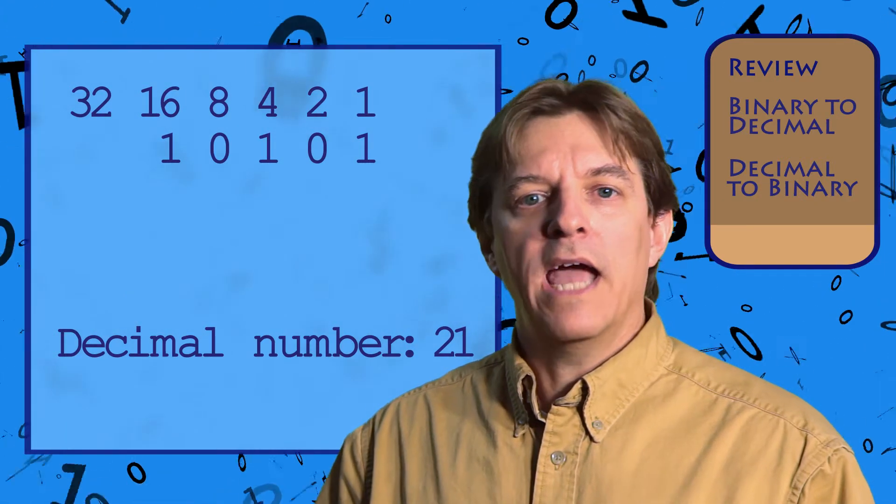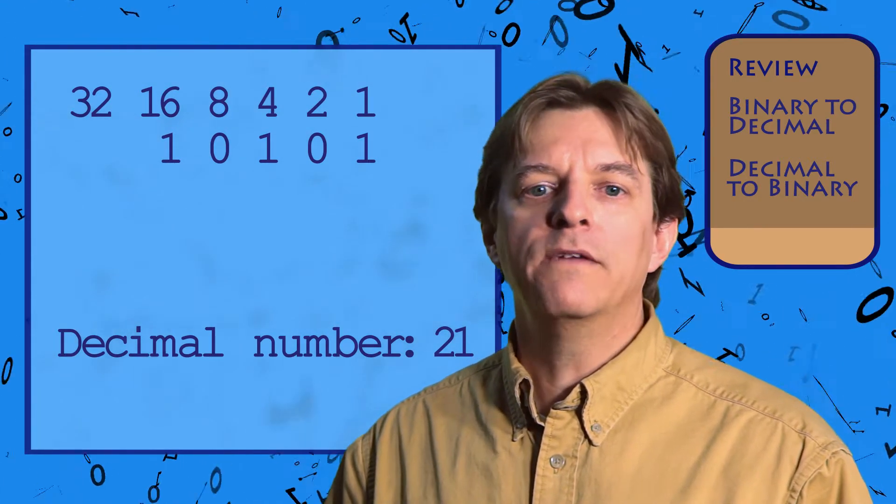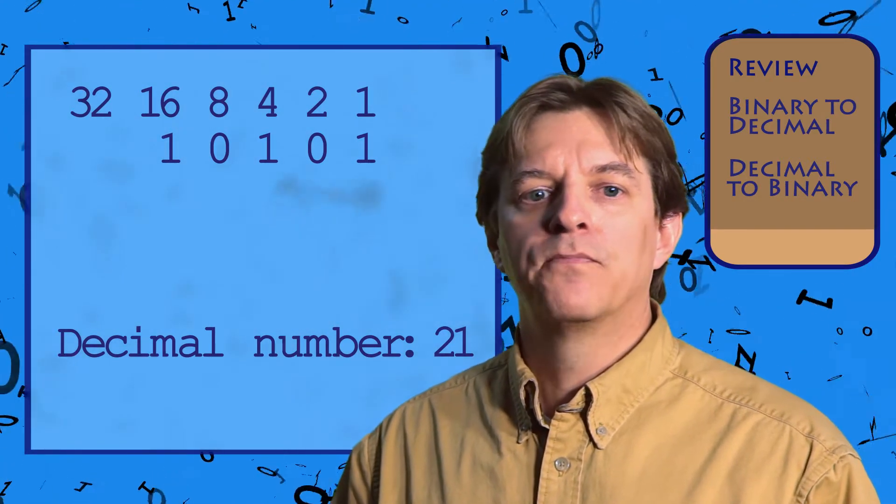Looking at the binary value, we have 1, 0, 1, 0, 1, which is what we saw in the previous example of binary to decimal. So it all works!